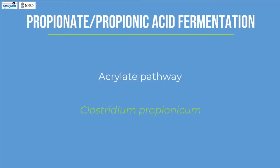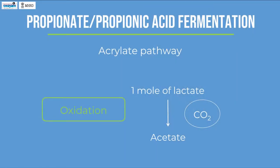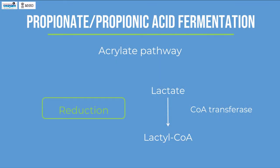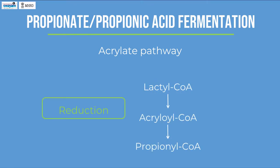Acrylate Pathway. This pathway is carried out by Clostridium propionicum and consists of oxidative and reductive reactions. In the oxidation part, one mole of lactate is oxidized to acetate with the emission of carbon dioxide. In the reduction part, lactate is activated to lactyl-CoA by CoA transferase; the lactyl-CoA is dehydrated to acrylate and is then reduced to propionyl-CoA. The propionyl-CoA is then converted to propionate.